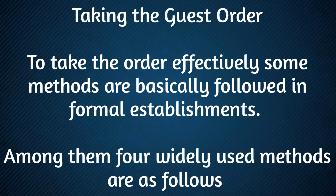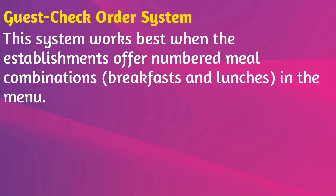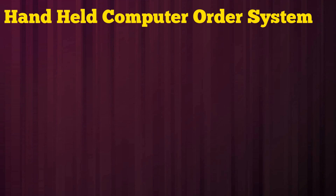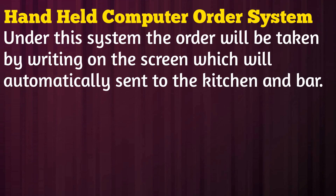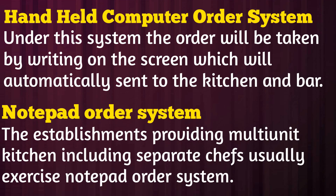Taking the guest order. To take orders effectively, some methods are followed in formal establishments. Four widely used methods are: the guest check order system, which works best when establishments offer numbered meal combinations such as breakfasts and lunches; the checklist order system, used where limited food items are offered, such as in short order or fast food restaurants; the handheld computer order system, where the order is taken by writing on a screen which automatically sends it to the kitchen and bar; and the notepad order system, used by establishments with multi-unit kitchens including separate chefs.